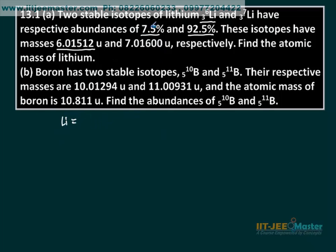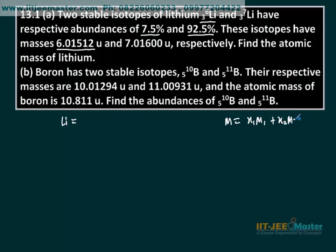To find it, we use fractions. To find the atomic mass, it is fraction 1 multiplied by mass of the first atom, plus fraction 2 multiplied by mass of the second type of atom.